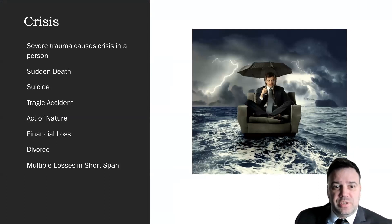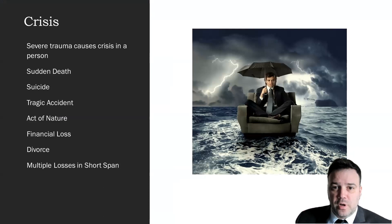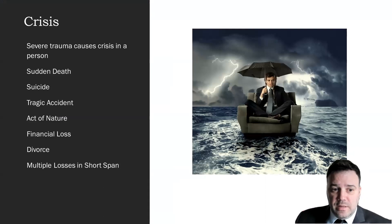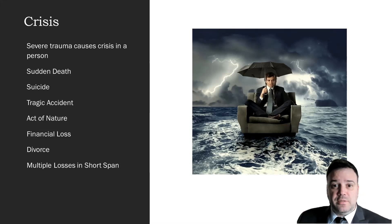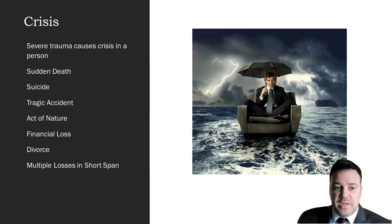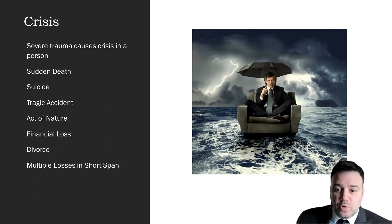With crisis, we see situations where an individual experiences severe trauma. Maybe that severe trauma is due to a sudden death, a suicide they just learned about, or a tragic accident. It could be an act of nature such as a hurricane that destroyed someone's home or a tornado. It could be a sudden financial loss, such as when the Great Depression occurred and people lost all of their life savings. It could be a divorce, or individuals may find themselves in crisis when dealing with multiple losses in a short span of time.